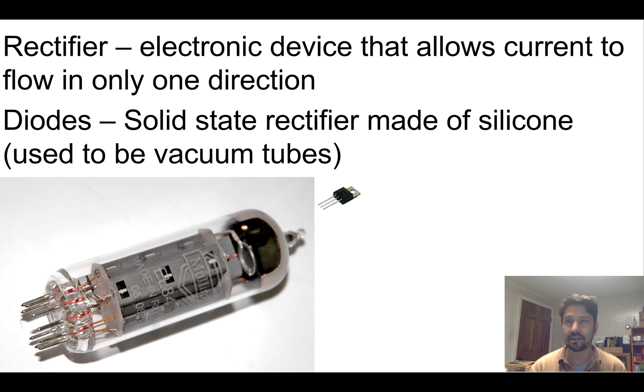So a rectifier is an electronic device that lets electrons flow in one direction. You can think of it as a gate, and we also refer to them as diodes, because like everything we give them four or five names just to keep you confused. They used to be these big old vacuum tubes. Now they're these little integrated circuit devices.